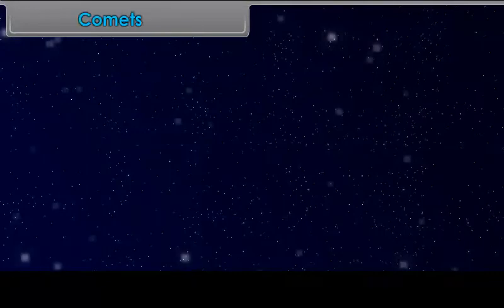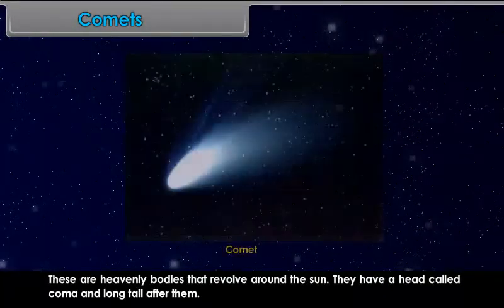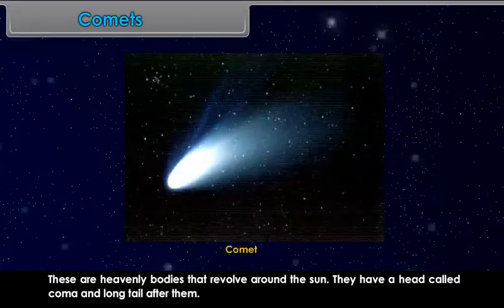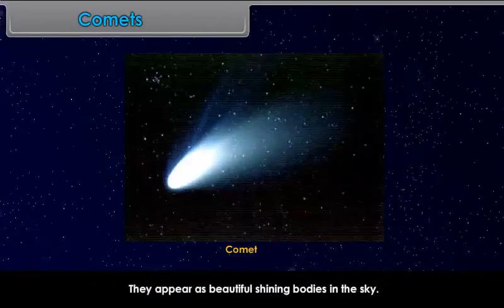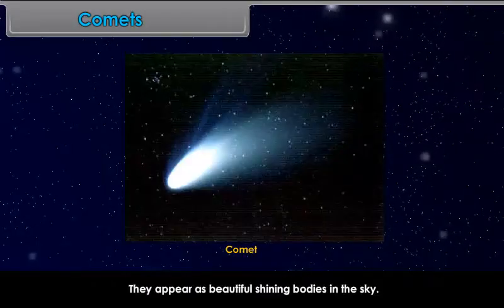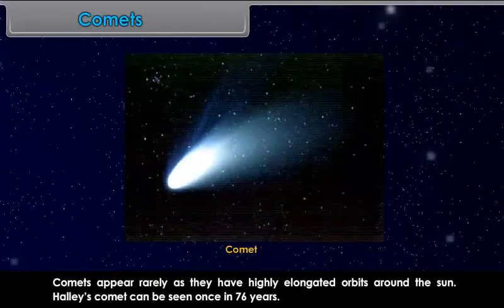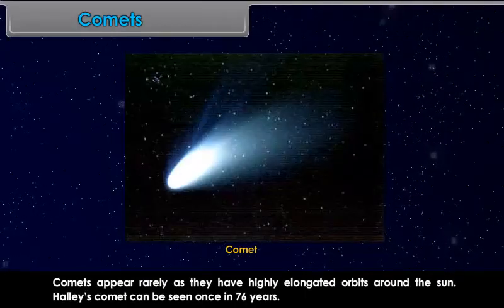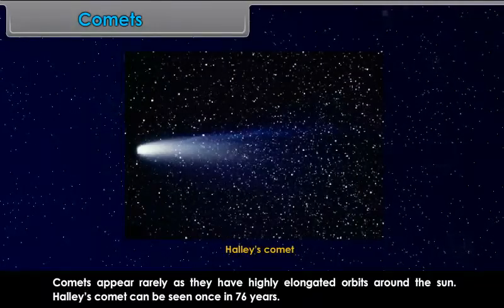Comets. These are heavenly bodies that revolve around the Sun. They have a head called Coma and a long tail after them. They appear as beautiful shining bodies in the sky. Comets appear rarely as they have highly elongated orbits around the Sun. Halley's comet can be seen once in 76 years.